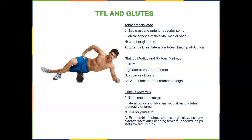The tensor fasciae latae (TFL) is what you're foam rolling when you roll your upper thigh. It originates on the iliac crest and anterior superior iliac spine, inserts via the IT band into the lateral condyle of the tibia, and is innervated by the superior gluteal nerve. The TFL extends the knee, laterally rotates the tibia, and performs hip abduction.